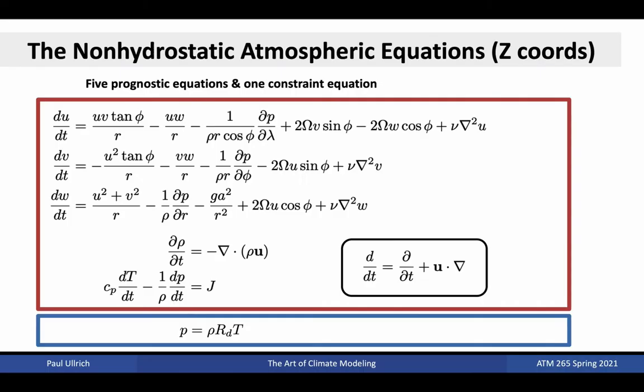Perhaps the most complicated equations we can employ for dry hydrodynamics are the fully unapproximated non-hydrostatic atmospheric equations. These are equivalent to the Navier-Stokes equations in spherical geometry and include three prognostic equations for dynamics, two prognostic equations for thermodynamics, and one constraint equation in the form of the ideal gas law. This is also our starting point when examining different equation sets.